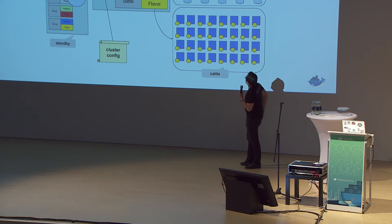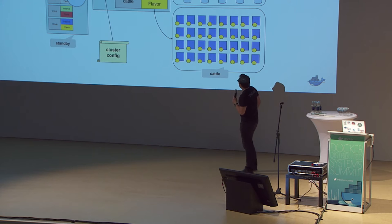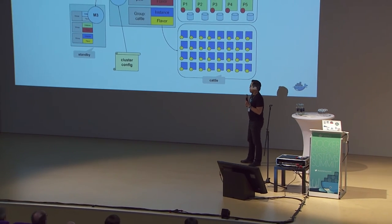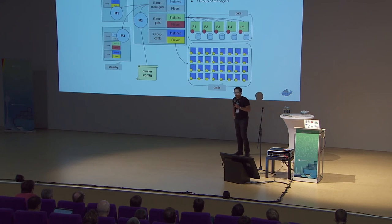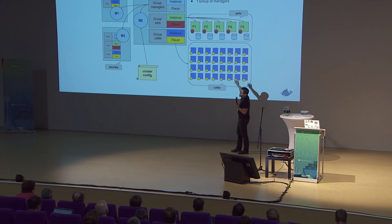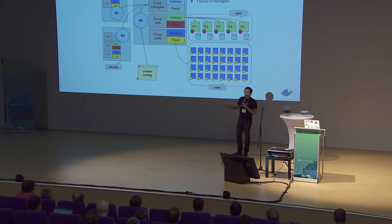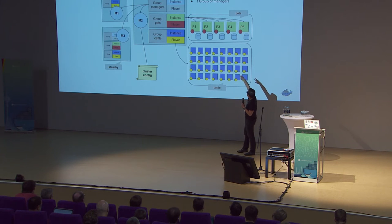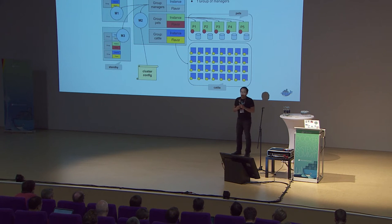The second group is more interesting — we call it pets. Pets is the kind of group where individual members have their own identity. Each one has its own assigned IP address and can have stable storage so it can maintain state. A good example of pets would be a Zookeeper cluster or a MySQL cluster.